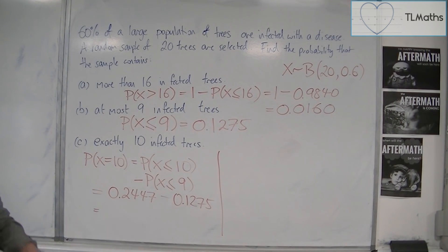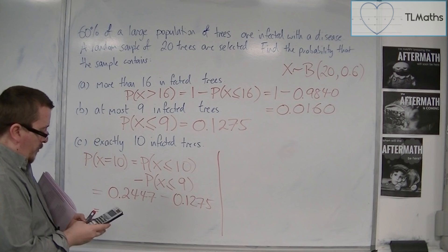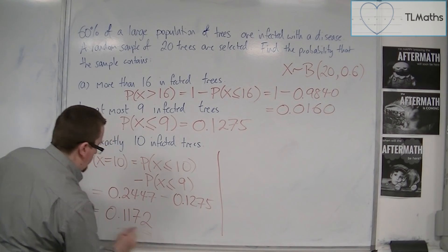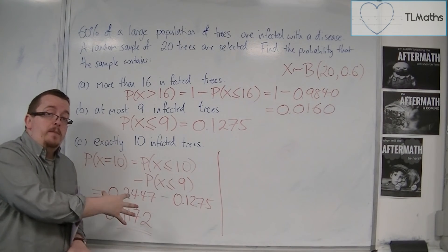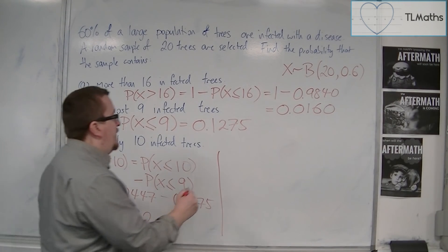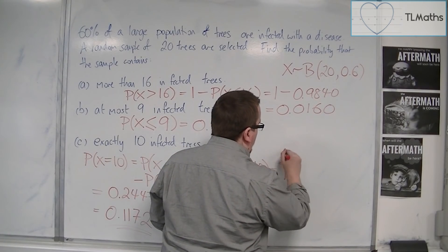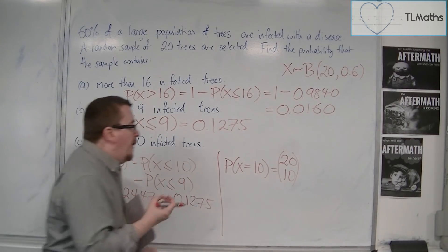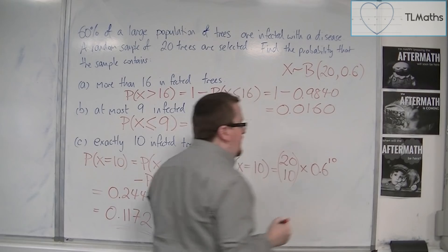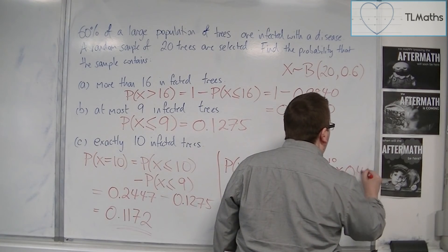I could do this on the board. I'm going to use a calculator. So 0.2447 take away 0.1275, and we get 0.1172. Now, that's the first way of doing it. You can use the tables to get an answer that way. Or, of course, you can use the formula. So the probability of X being equal to 10 is, well, out of the 20, I want 10. So 20 NCR 10, times by the probability of success, which is 0.6, and I want that to happen 10 times. And multiply that by the probability of failure, which is 0.4, and I want that to happen also 10 times.